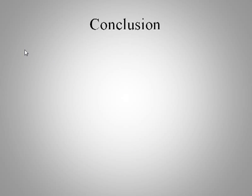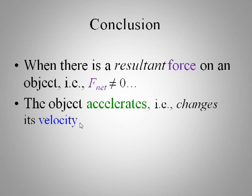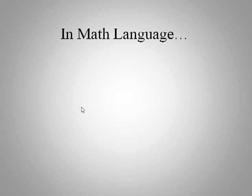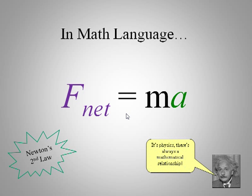So it's worth restating this clearly. So let's do that. So when there's a resultant force on an object, that is the net force is not zero, then an object will accelerate. Its velocity or its motion will change somehow. In math language we can say it this way. The net force on an object of mass m causes an acceleration a. This is Newton's second law. There's always a mathematical relationship.